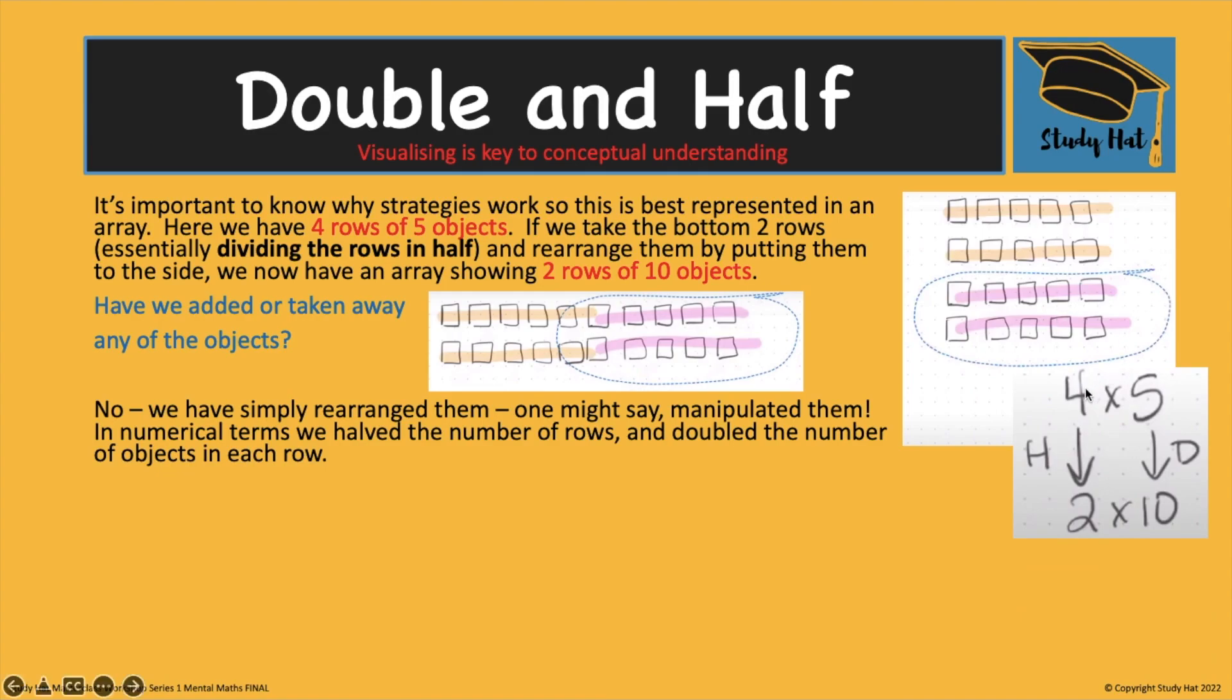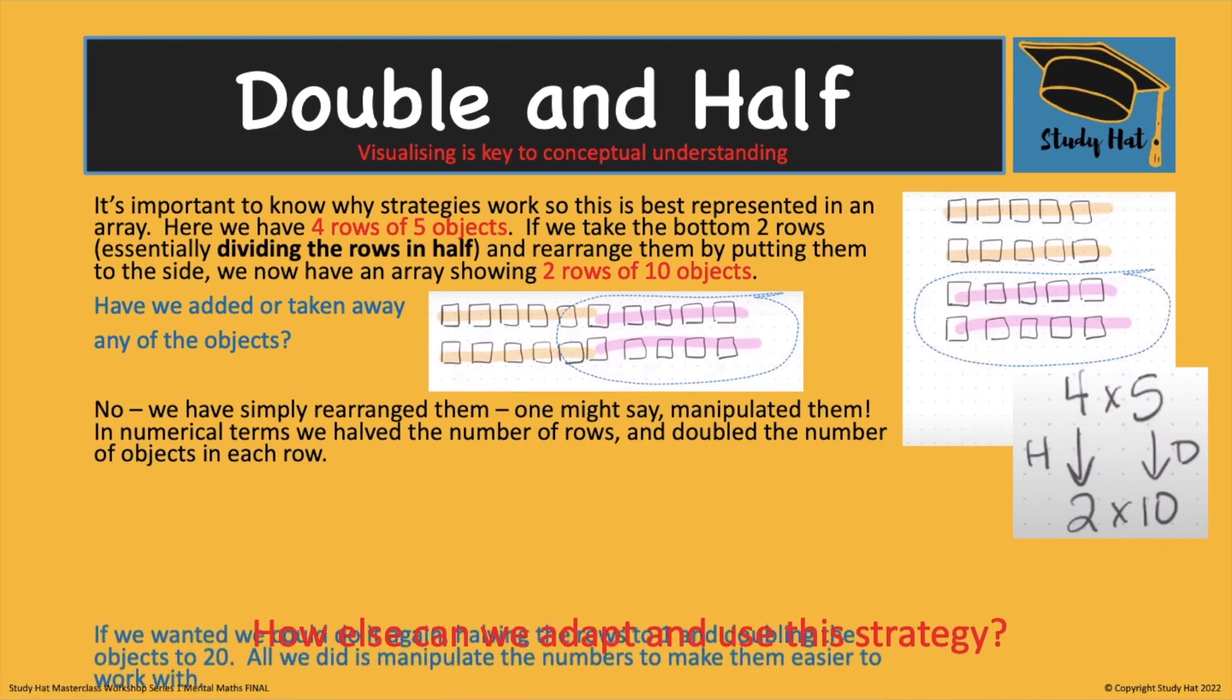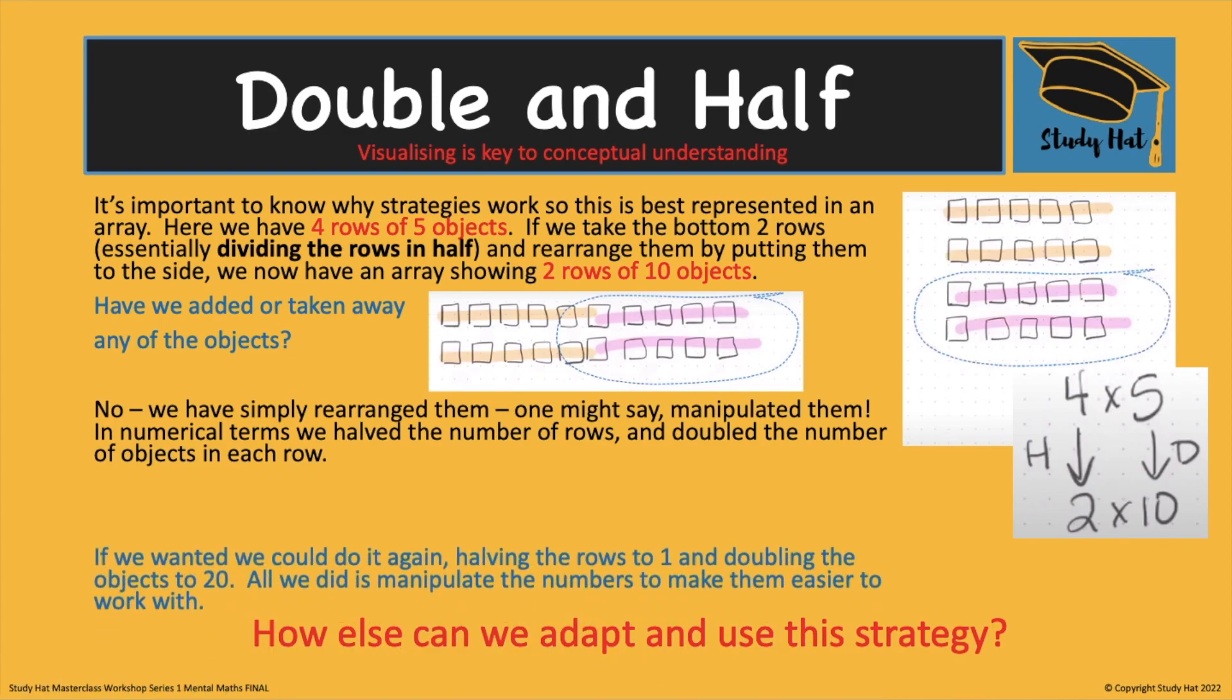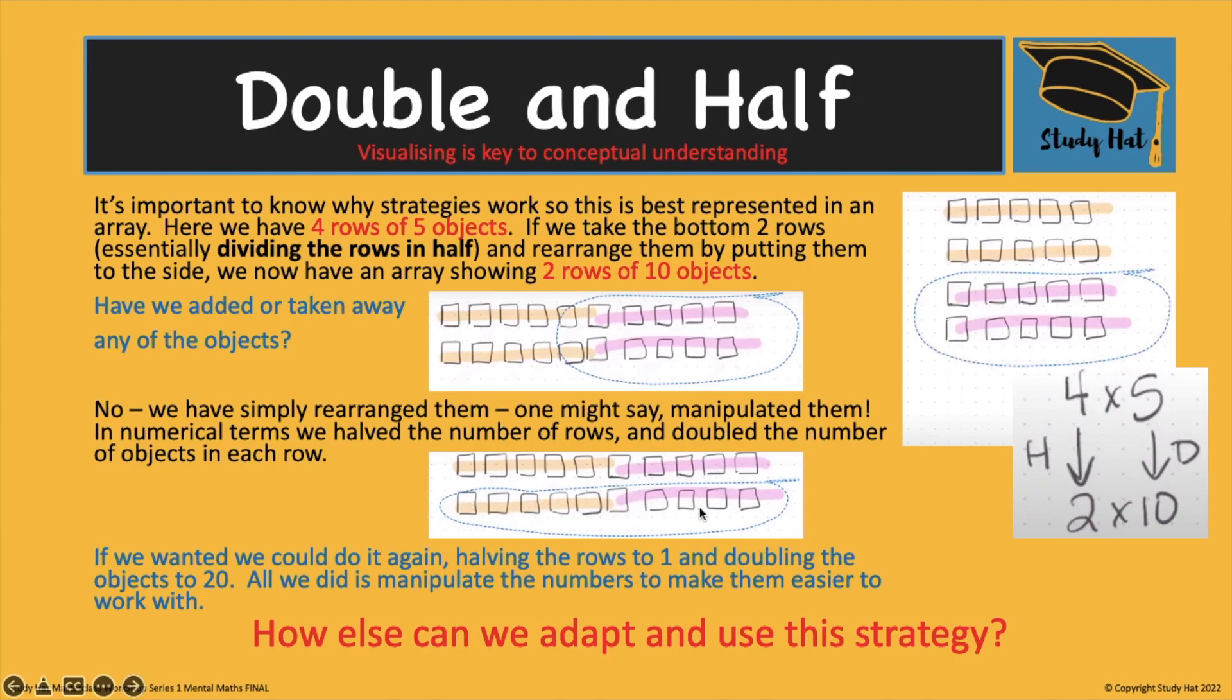Mathematically it looks like this. 4 halved is 2. 5 doubled is 10. You had 5 now it's 10. Now left with two rows of 10 objects. You can take this one step further and adapt the strategy if you need to and do doubling and halving again. Essentially just halve the row, place it alongside giving you now one row of 20.